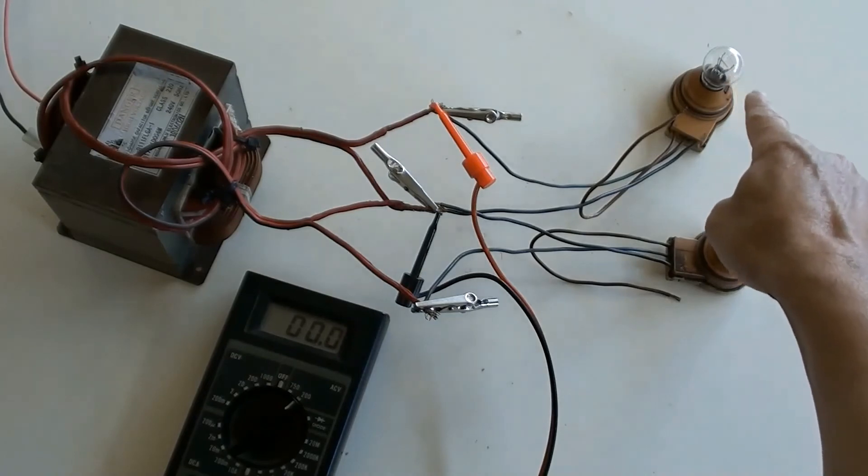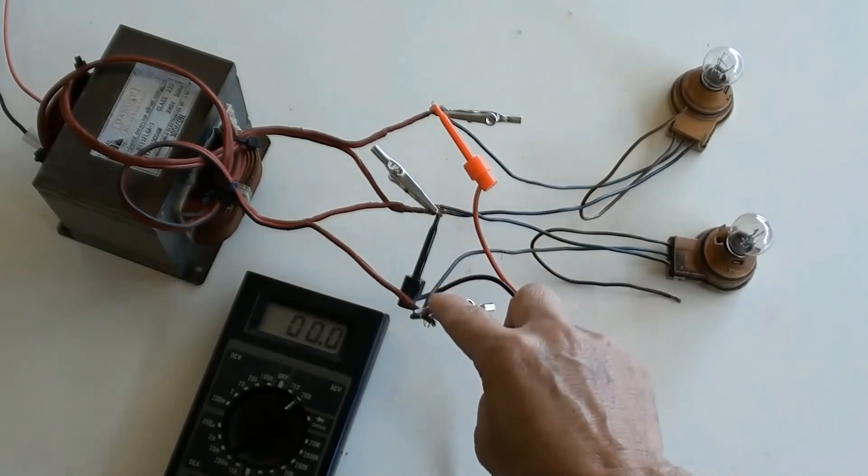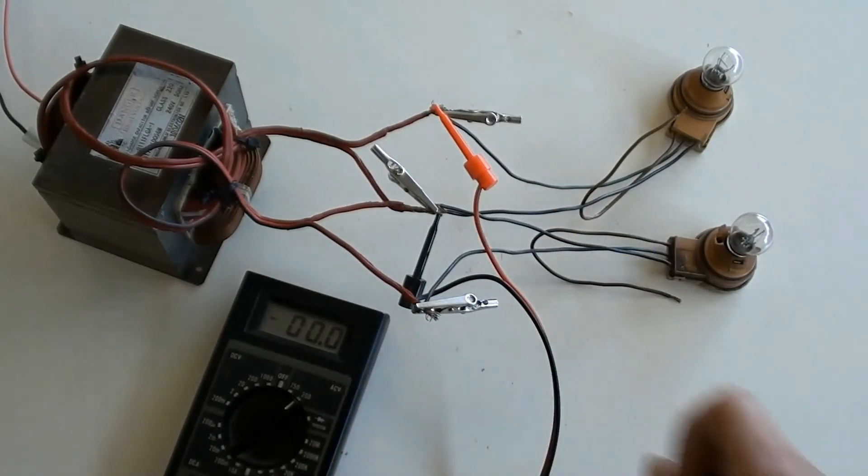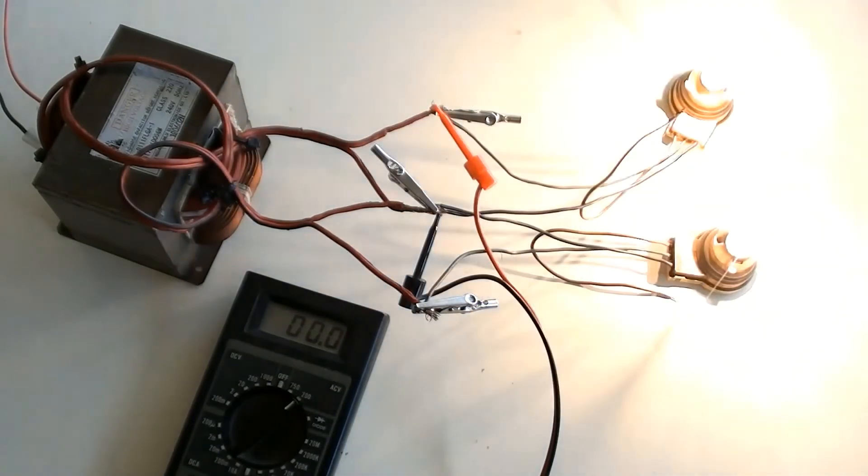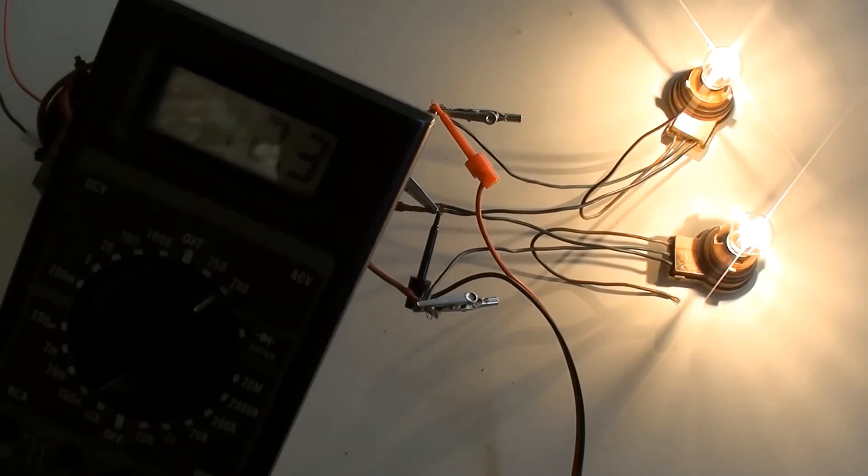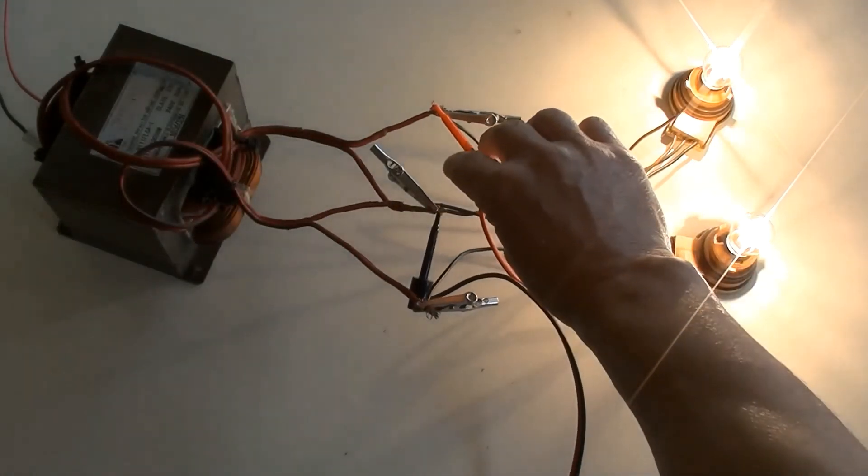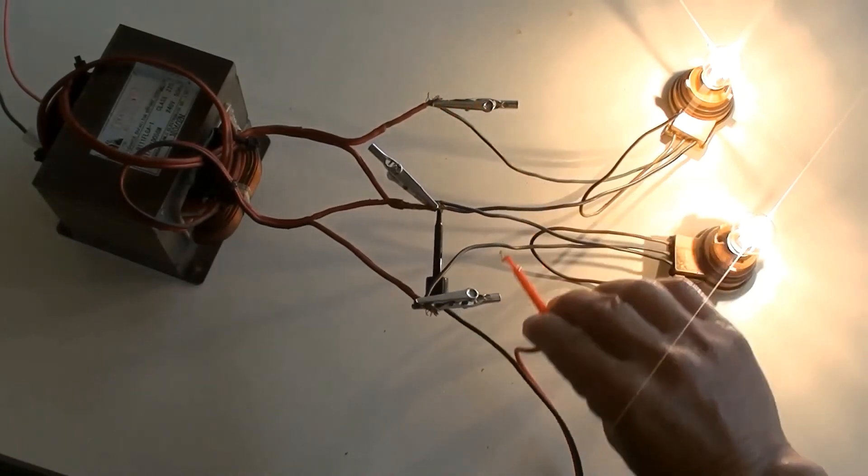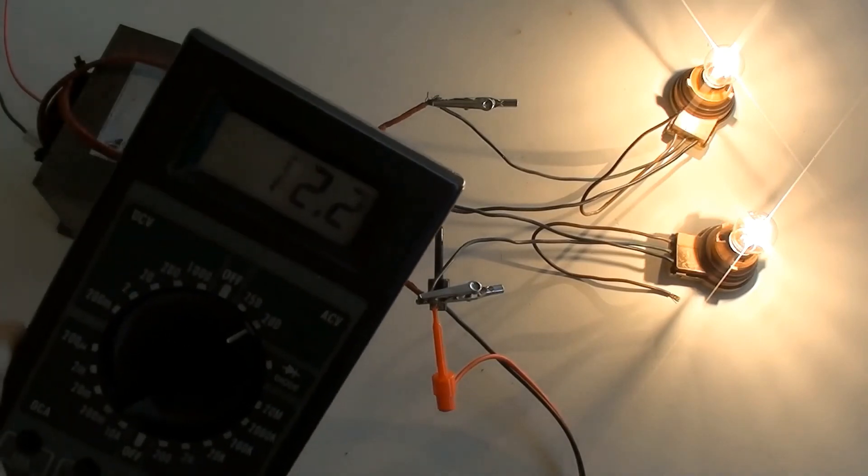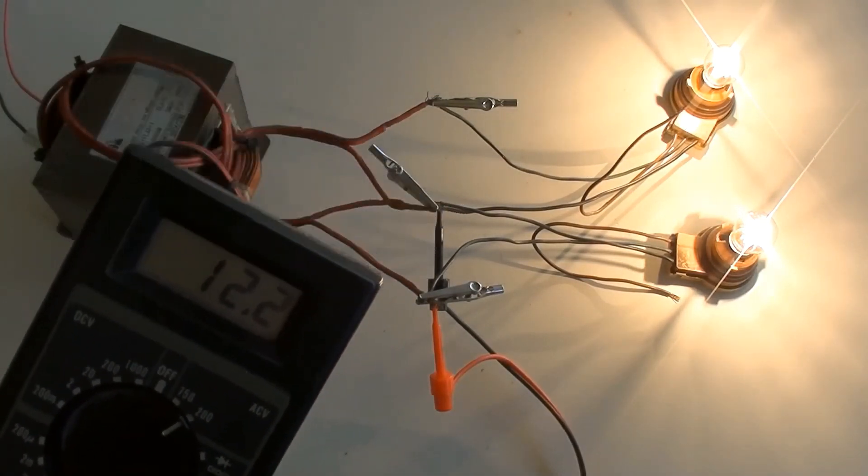Two globes of 12 volt 21 watt have been connected to the output circuit divided by center tap terminal, and multimeter probes connected to top globe circuit. Switched power on. The multimeter has indicated 12.3 volt. Changed one meter's probe from the top globe to the bottom globe. 12.3 volt indicated as well. That's good.